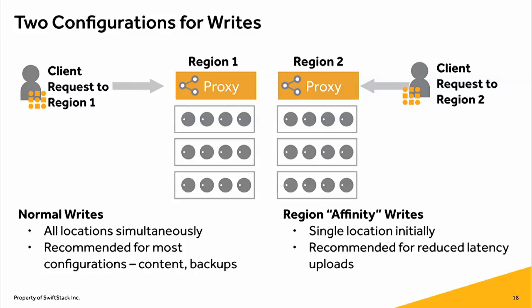With writes, there are two configuration options. The first is what we call a normal write — this is the default setting we recommend for most use cases. The client puts data into the proxy, which streams it to all storage locations simultaneously. We recommend this for most use cases because when you're loading data into the system, you want the data to go live in all locations at the same time. It's great for backups, great for content, and it prevents replication from falling behind client ingest.